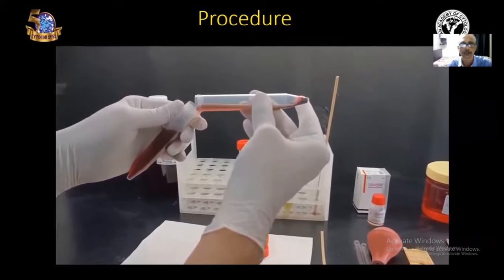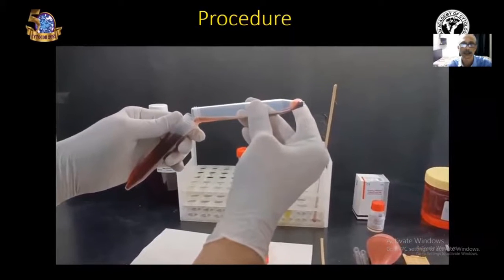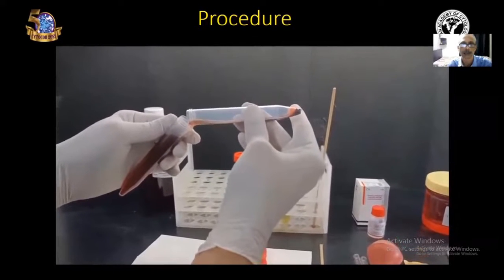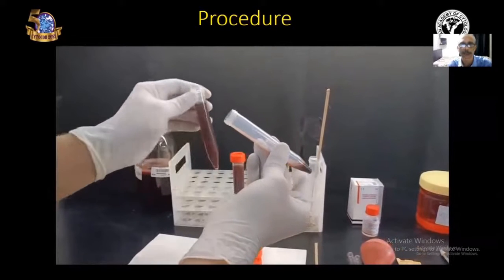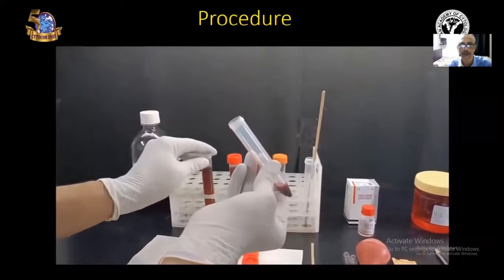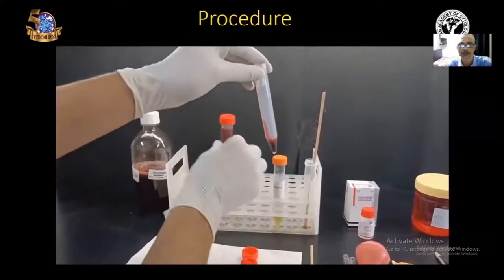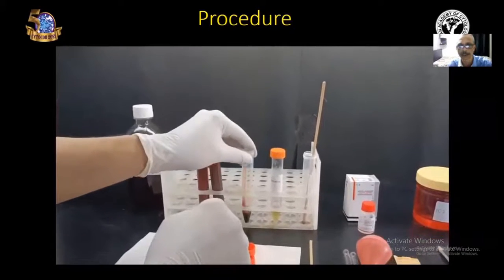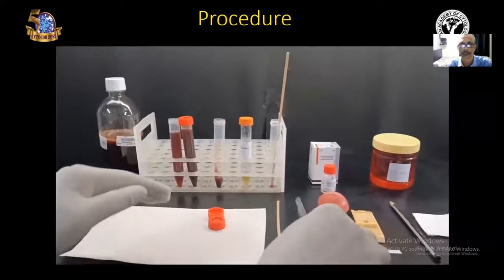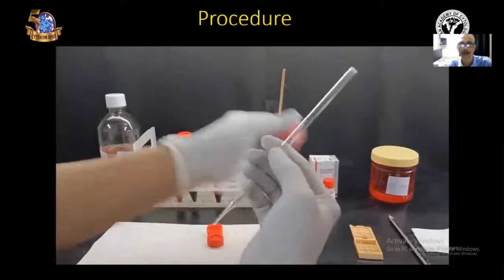Now, the supernatant is almost completely separated and the tube is kept aside. This is the tube with the sediment. Keep it aside, and the next step is adding the plasma.